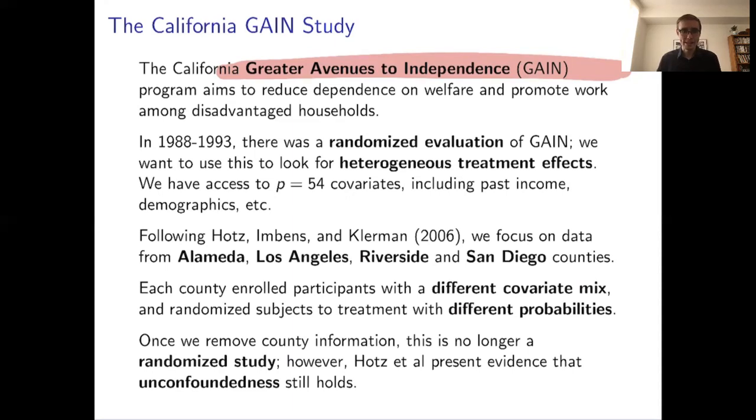As part of this study, we have access to 54 covariates, including past income, demographics and so forth. So we have plenty to work with here for CATE estimation. What makes this dataset particularly interesting is that they didn't actually run one big randomized trial to evaluate GAIN. They ran a number of small different randomized trials in different counties. Here we have data from Alameda, Los Angeles, Riverside, and San Diego.